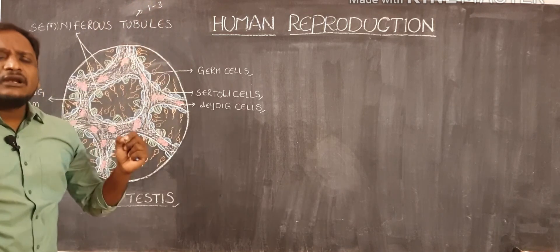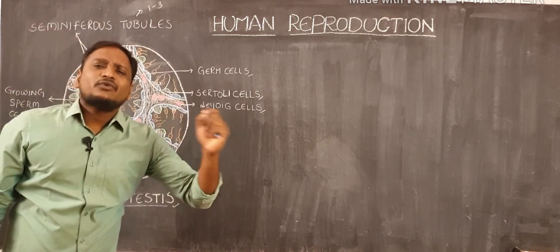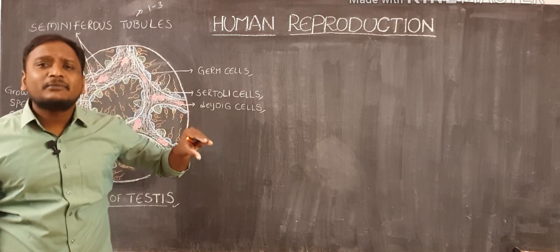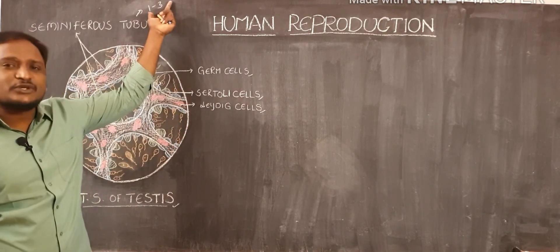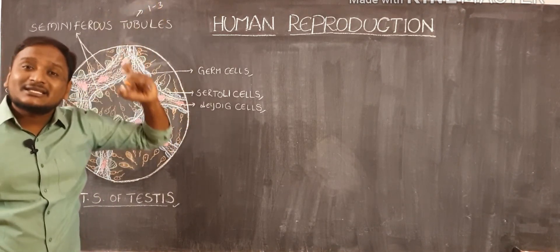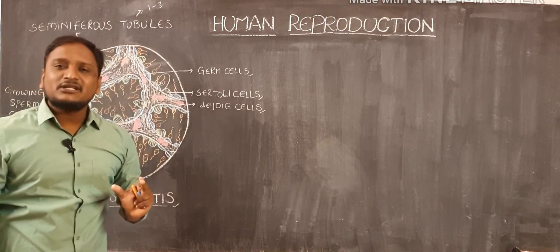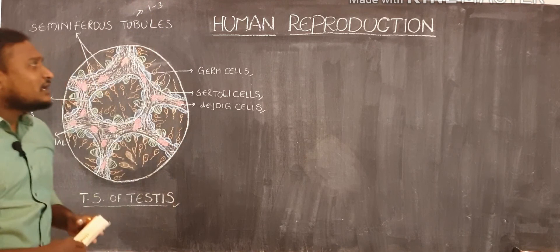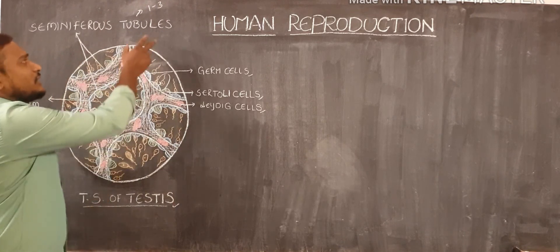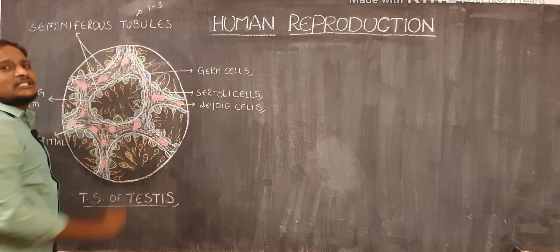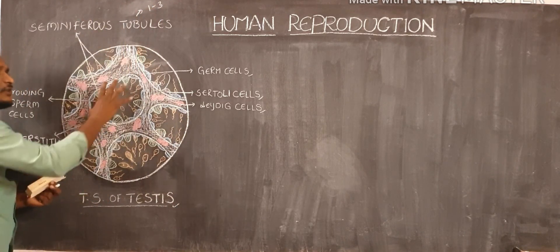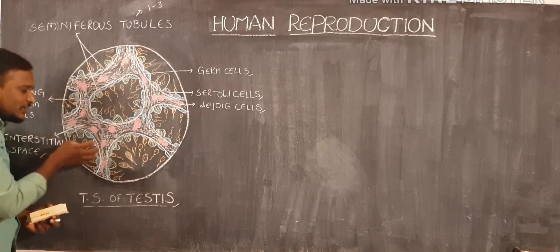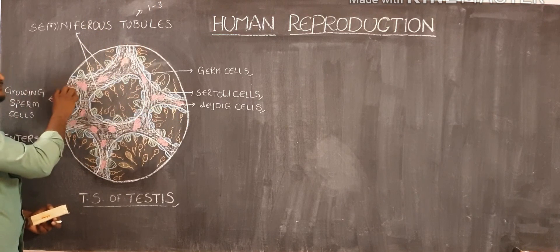For example, if a testes has exactly 250 compartments and each compartment consists of three seminiferous tubules, then each testes consists of 750 seminiferous tubules. Anyway, each compartment consists of one to three seminiferous tubules, and those seminiferous tubules will appear as vesicle-like structures present in the testes compartments.